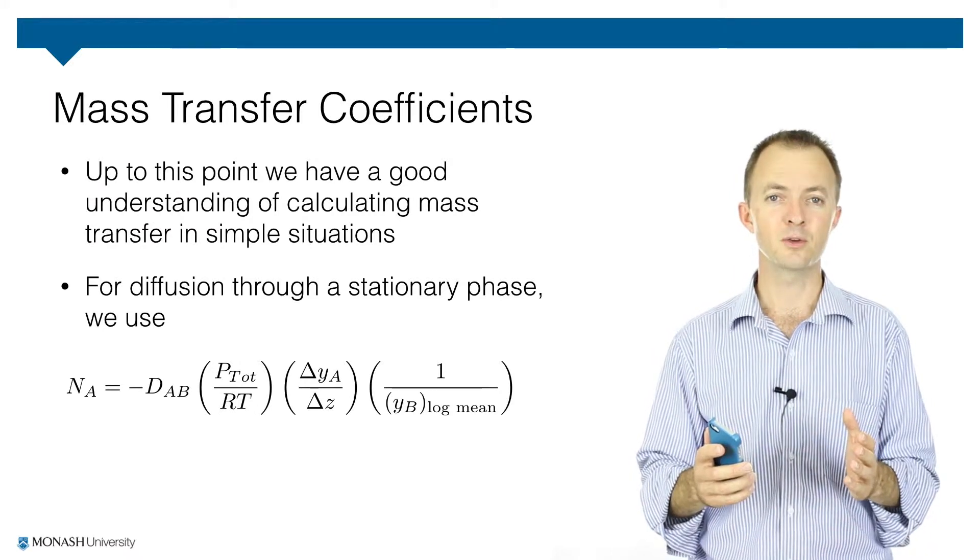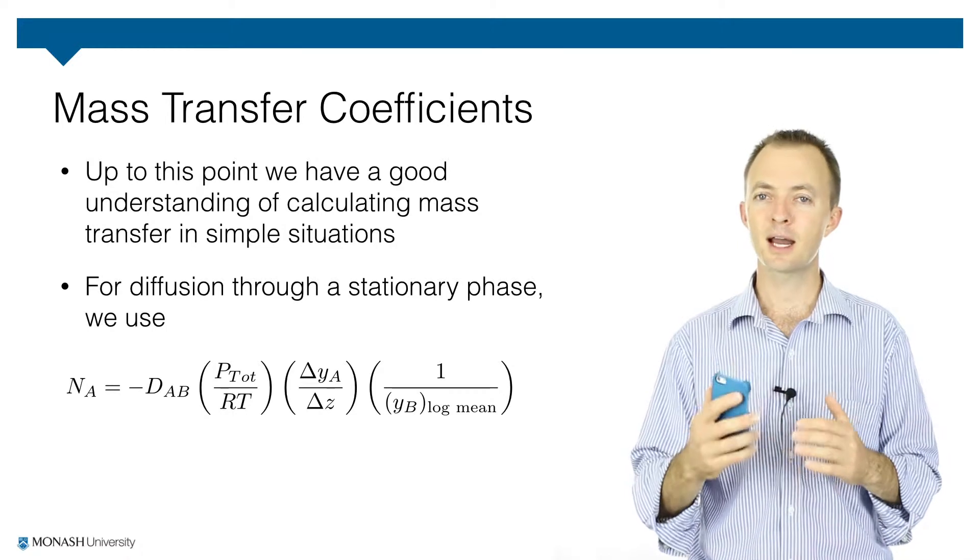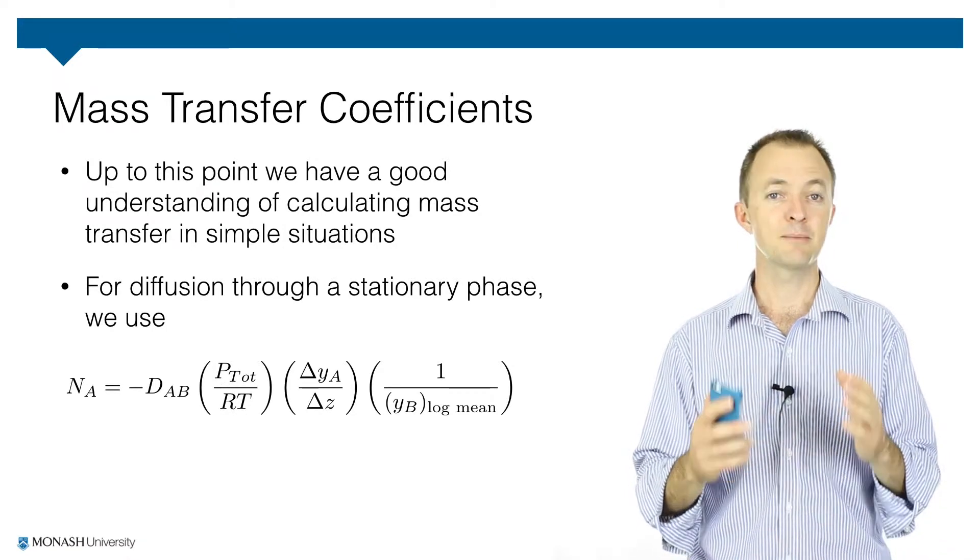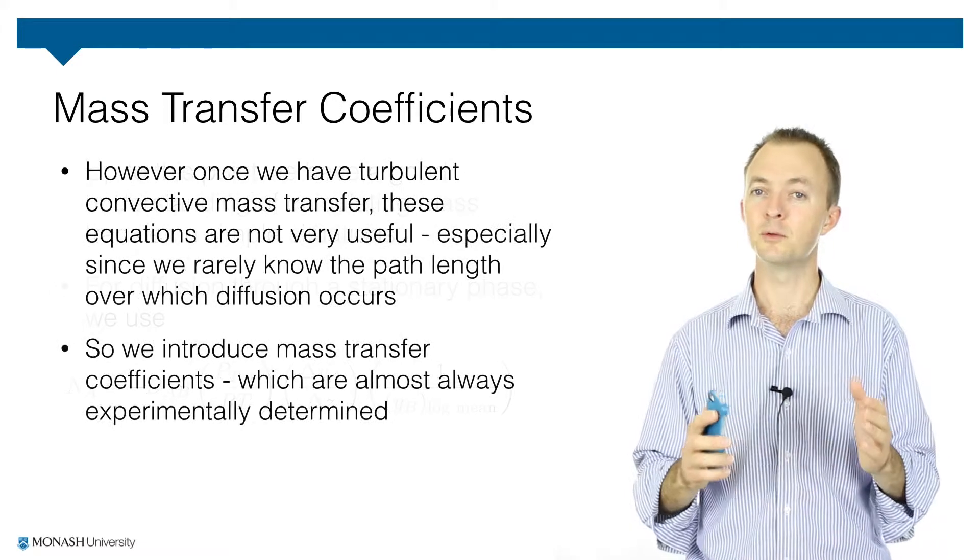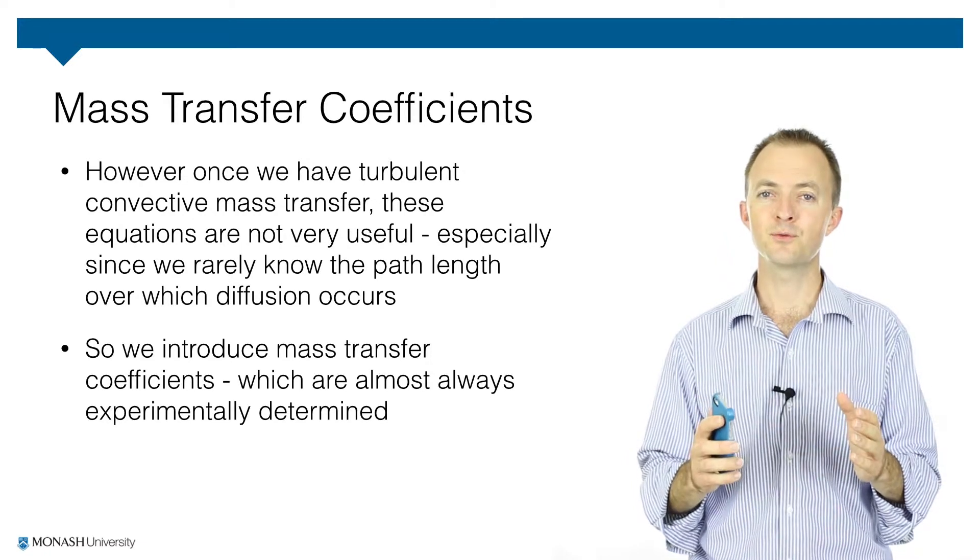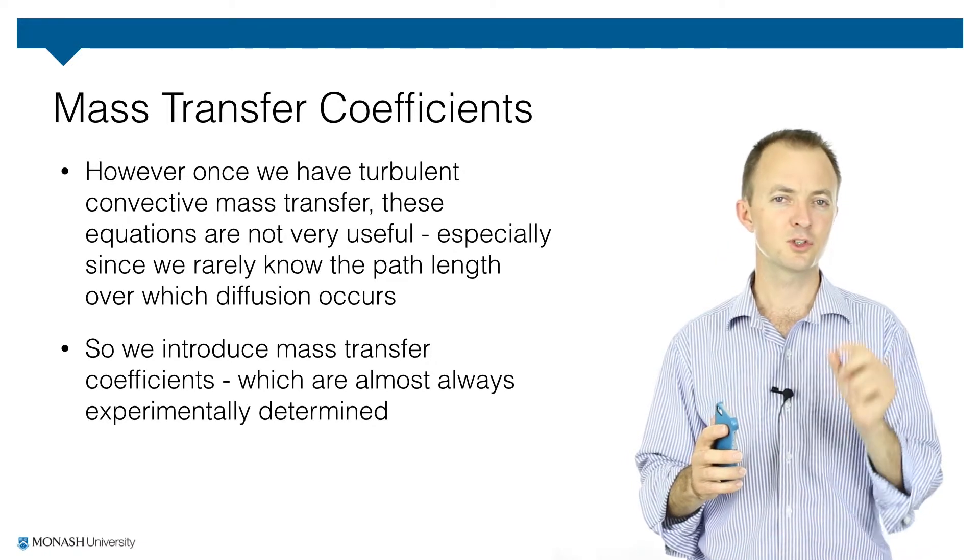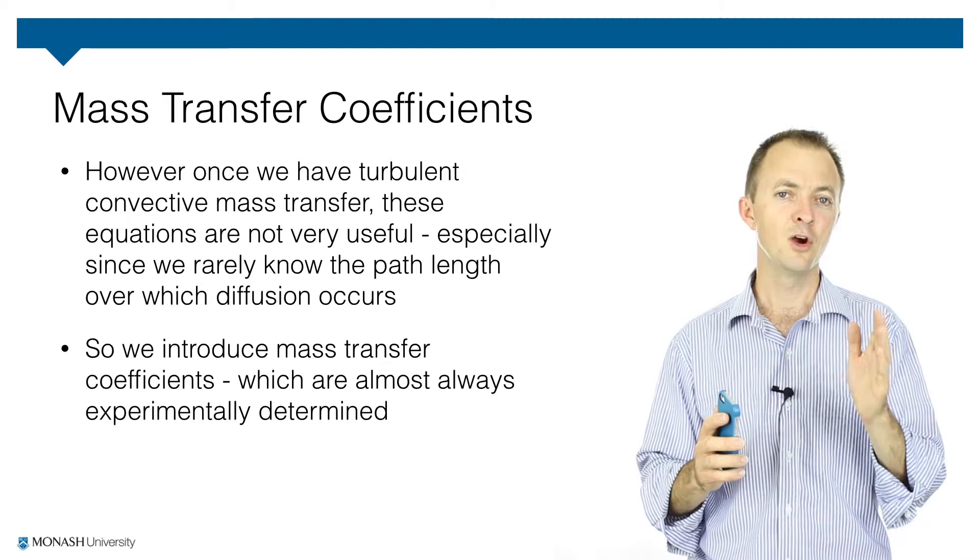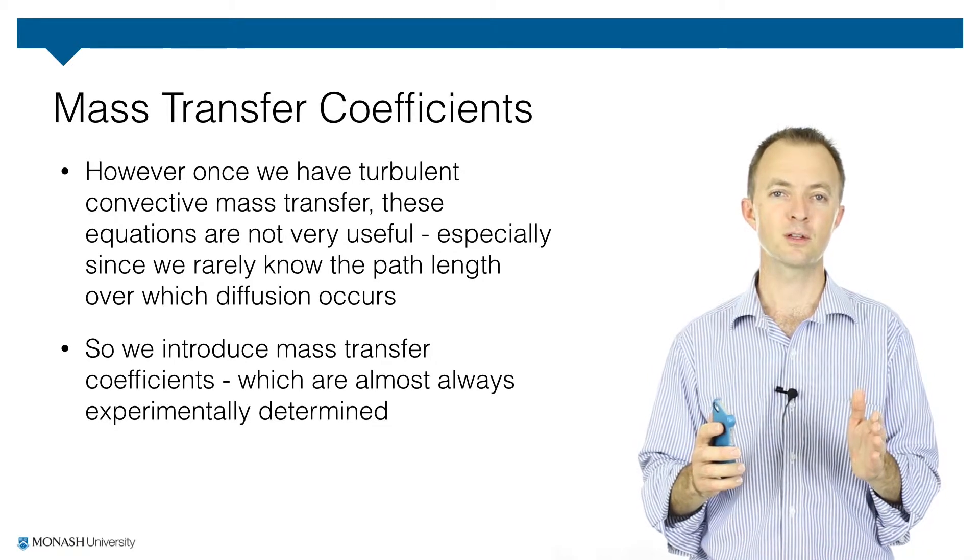What we're going to look at this week though, is the case where we can't use those equations, and particularly this applies with turbulent flow. So in turbulent flow, it's very difficult to determine the path length, or the distance over which the mass transfer occurs.